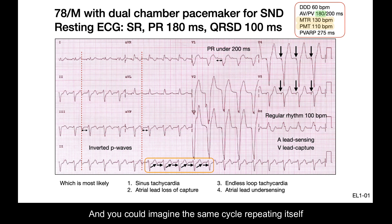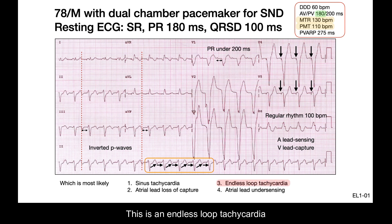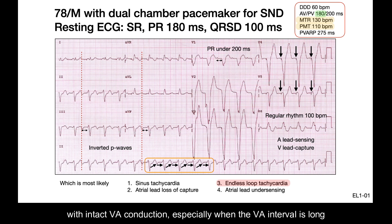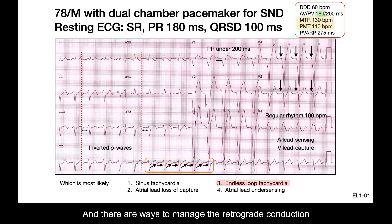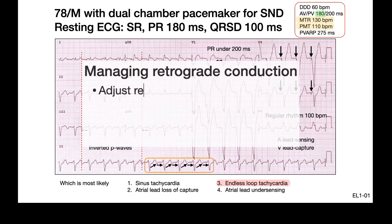You can imagine the same cycle repeating itself — this is an endless loop tachycardia. This occurs in a patient with a dual chamber pacemaker with intact VA conduction, especially when the VA interval is long.